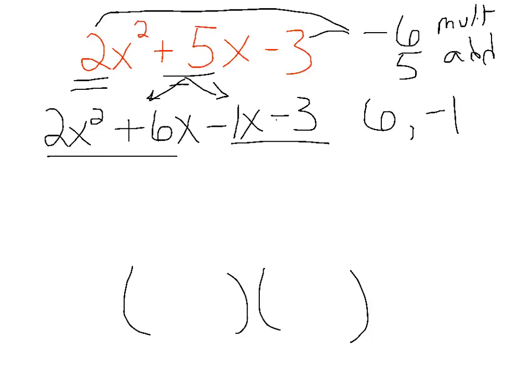Now I'm going to think of these in pairs and factor common factors. 2x comes out of the first factor, leaving me x plus 3. Negative 1 we'll divide out of that second pair, leaving me x plus 3.